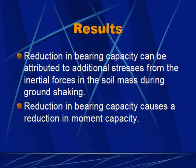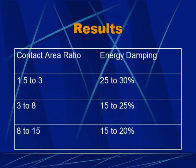Dynamic loading tests also showed that larger contact area ratios produce less permanent settlement and more cyclic uplift. The reduction in bearing capacity can be attributed to the additional stresses from the inertial forces and the soil mass during ground shaking, and is manifested as a reduction in moment capacity. Testing results show that when the contact area ratio is between 1.5 and 3, there is 25 to 30% energy damping; between 3 and 8, there is 15 to 25% energy damping; and between 8 and 15, there is 15 to 20% energy damping. The damping ratio appeared larger for dynamic shaking tests than for slow lateral cyclic tests when the footing sits on sand, while the reverse is true when the footing sits on clay.